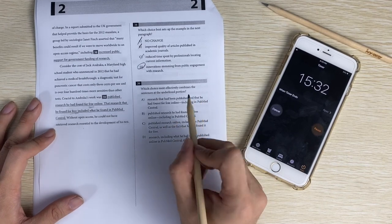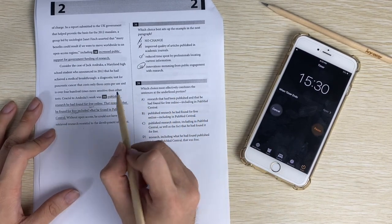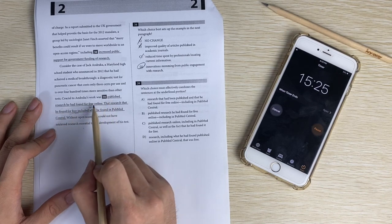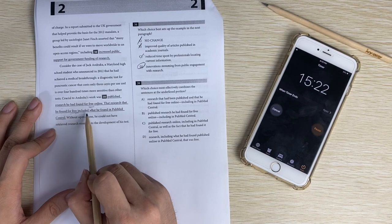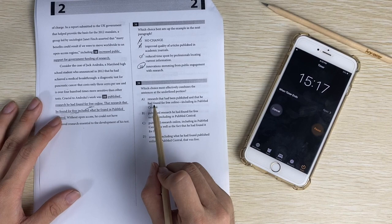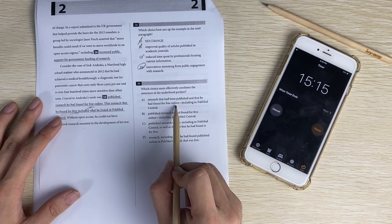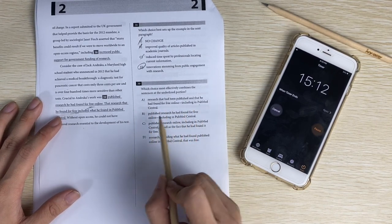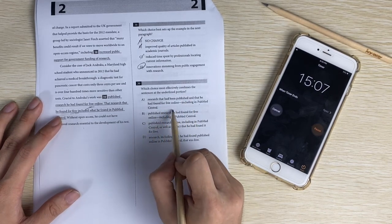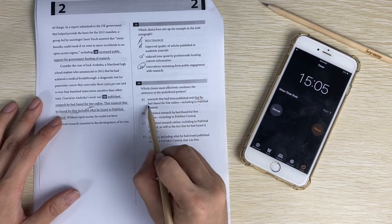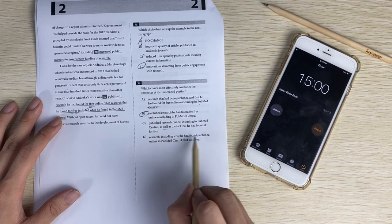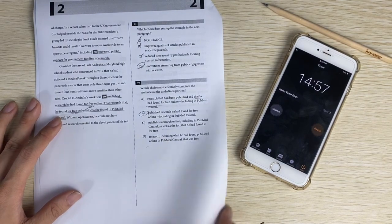Number thirty-nine, combine the sentences. Crucial to his work was published research he had found. So he found these free, and research he found free are these. So it should be found for free online. Included, those who found online - included, that's none. Found online, including research have been published and that he has - so that's wordy. And that says B. Found online, that's too long. Including what he had found that was free, too long.